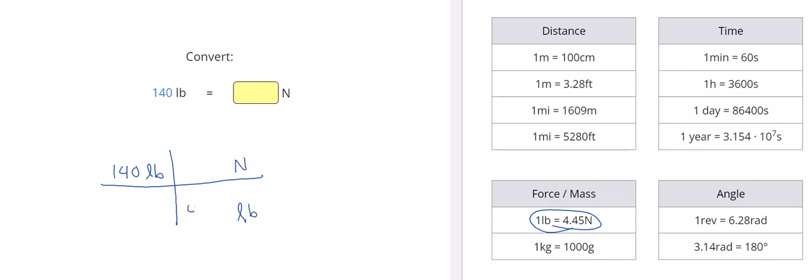So 4.45—4.45 went with the newtons was equal to one pound. So this time I'm putting in my calculator 140 times 4.45, and I get 623. As I expected, the pounds would cancel out and we're left with our answer in newtons, which is exactly what we wanted. So 623 newtons.